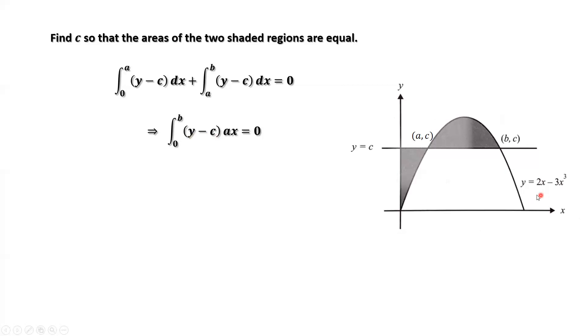Here, y equals 2x minus 3x to the power of 3. It's easy to find all anti-derivatives for this function, which is x squared minus 3 over 4x to the power of 4 minus cx. The integral from 0 to b.